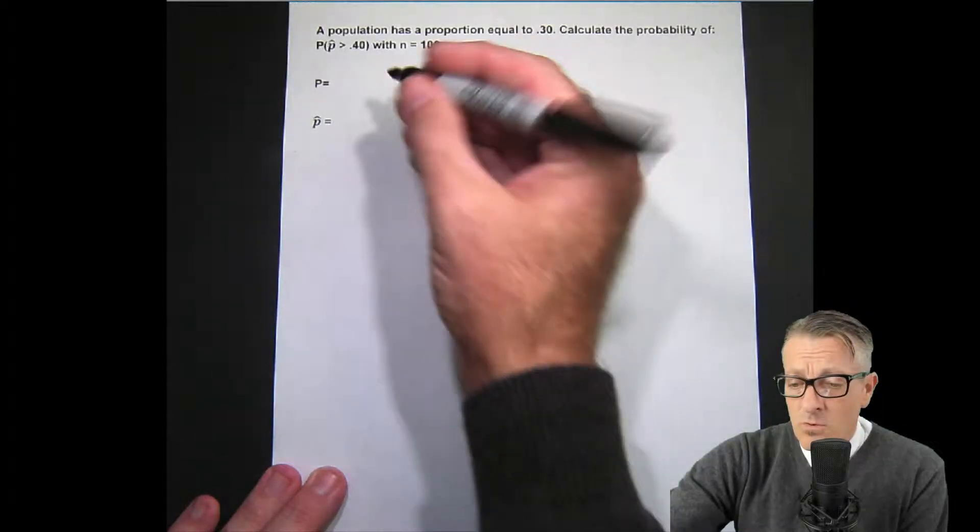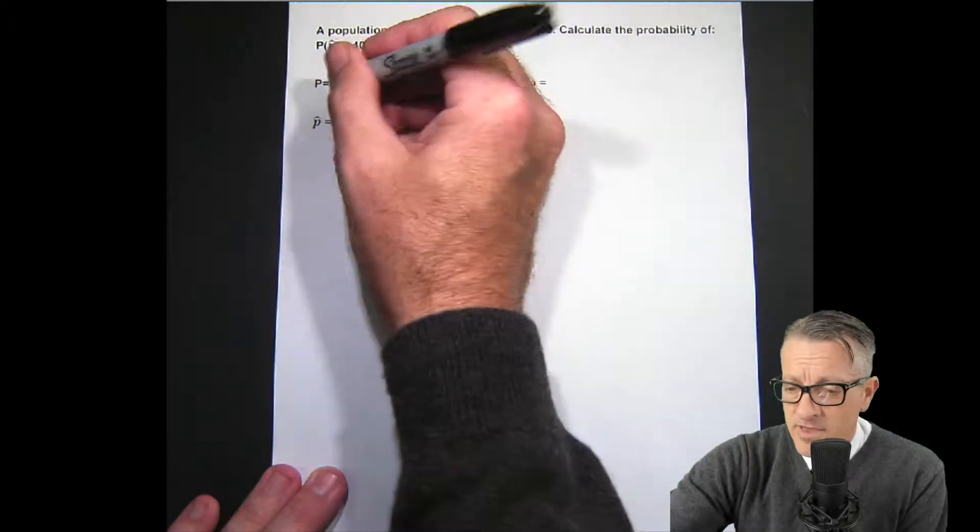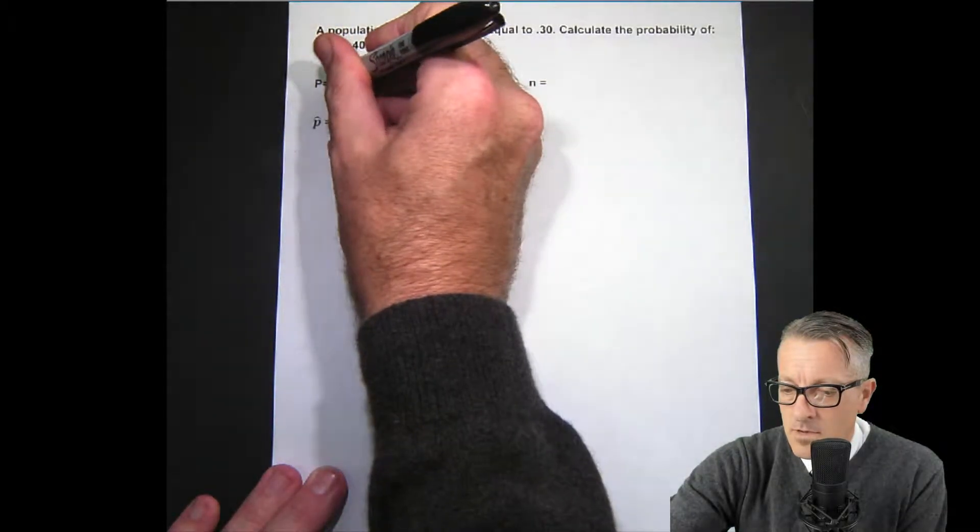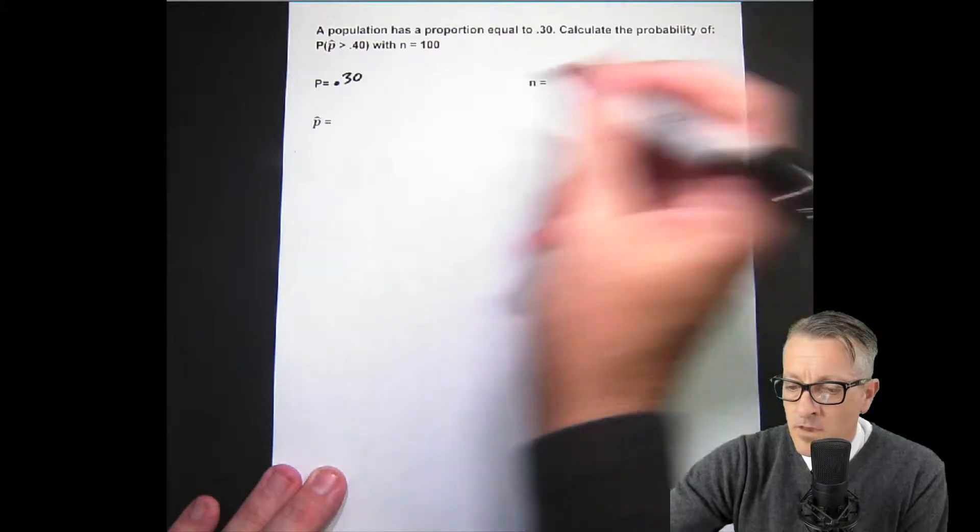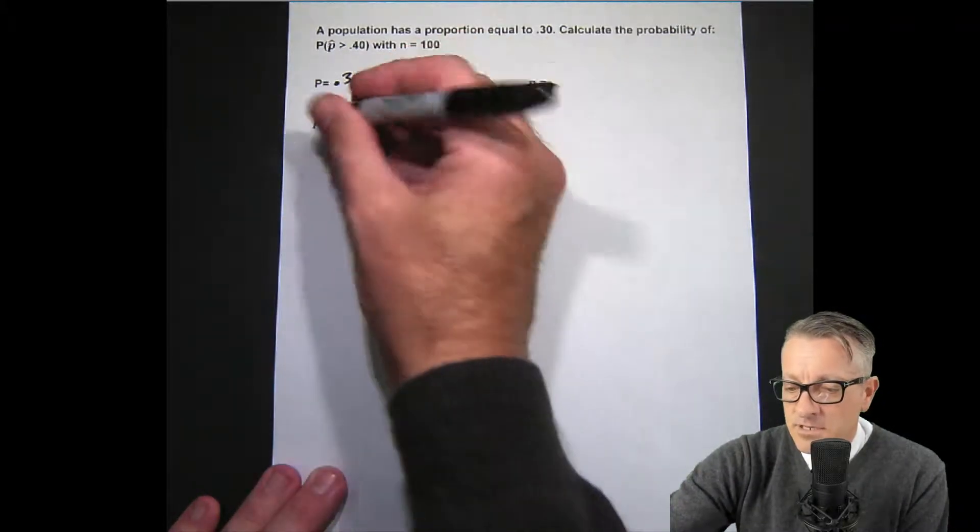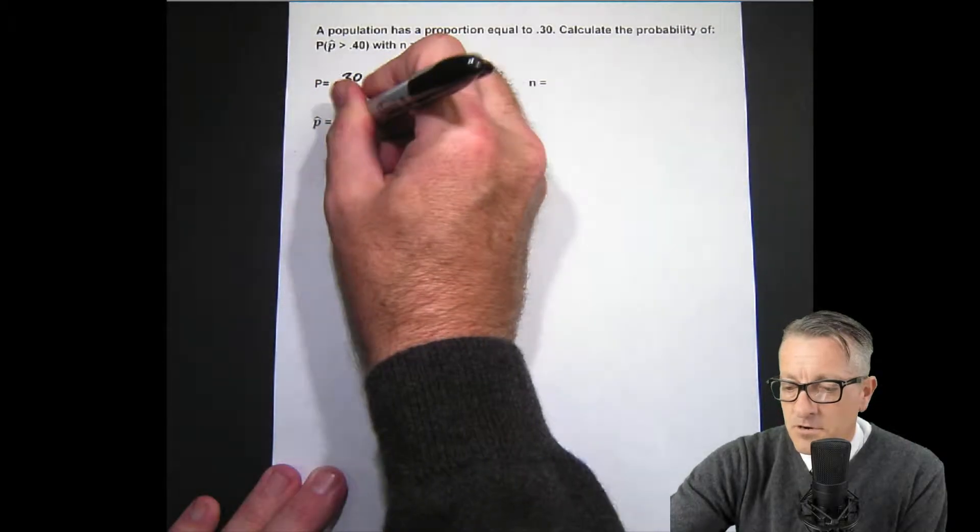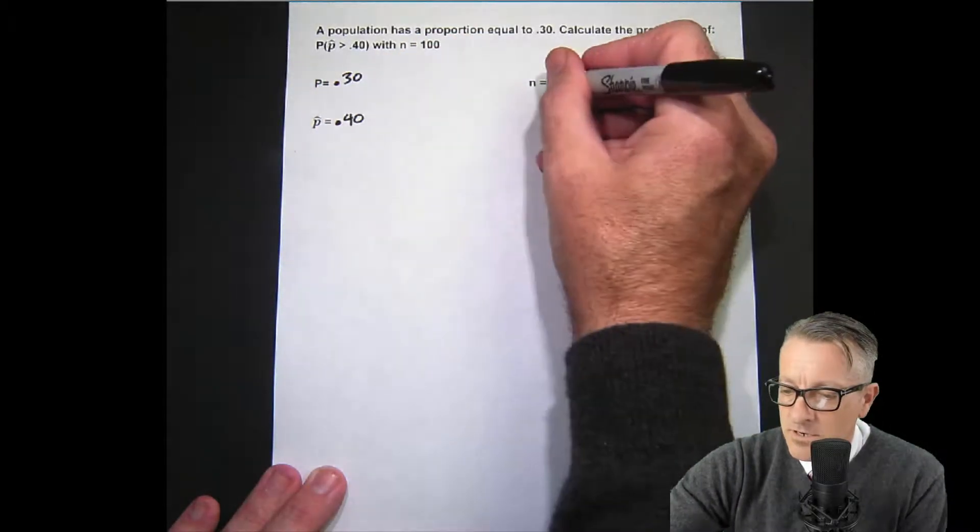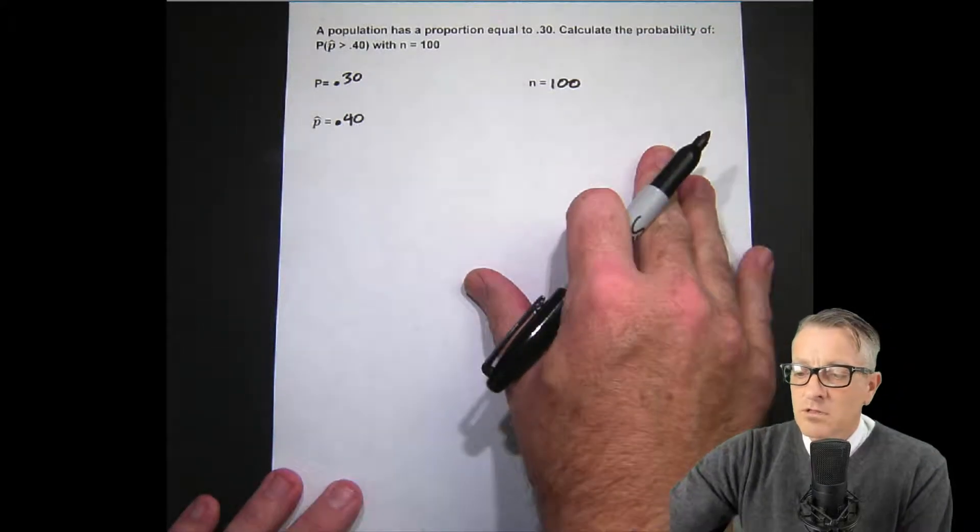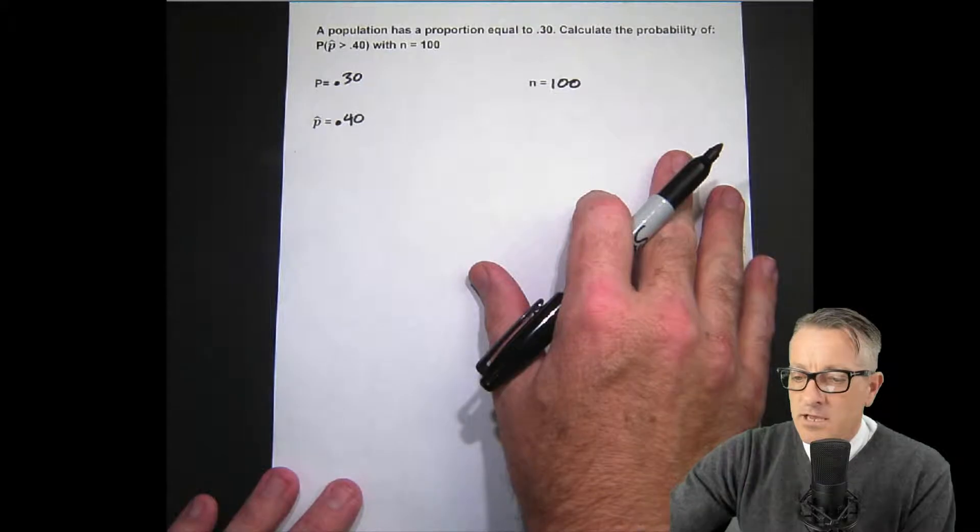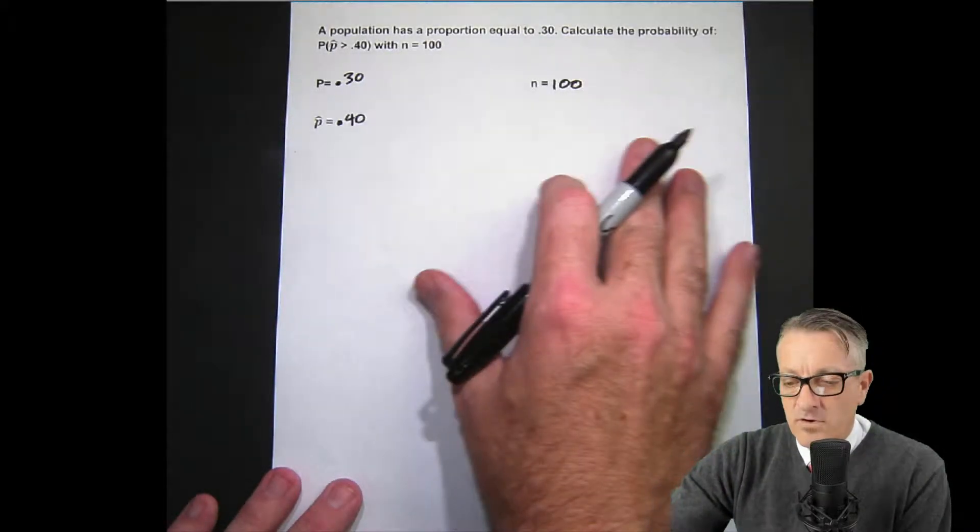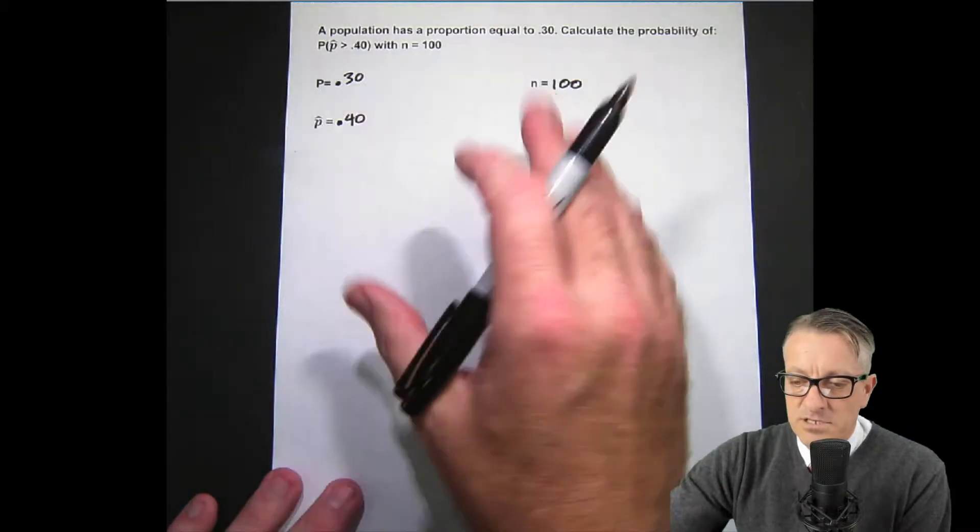Let's write down what we know. Our population parameter is 0.30. We're looking for the P hat, but our P hat in this one is 0.40, and then our n is 100. Some people say that proportion examples or calculations in statistics are easier than other regular ones using standard deviations and things like that. I'll let you be the judge on that.